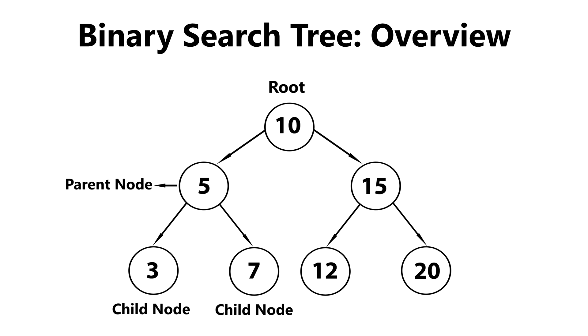Now, nodes that are siblings are child nodes that have the same parent. For example, 3 and 7 would be considered siblings since they both share the same parent. Moving on, a leaf node is a node with no children. In our case, 3, 7, 12, and 20 are all considered leaf nodes because they have no children.